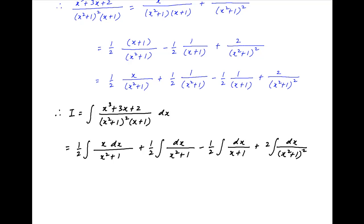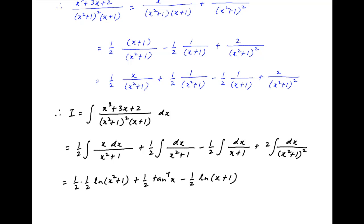The given integral I is therefore equal to one-half of ln(x squared plus 1) plus one-half of tan inverse x minus one-half of ln(x plus 1), plus the last term which is 2 times the integral of dx over (x squared plus 1) squared.